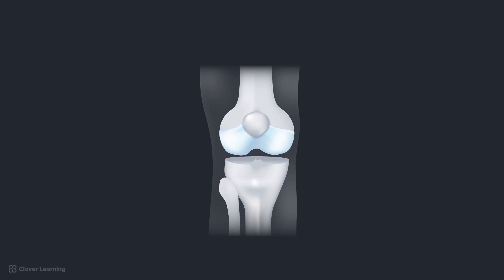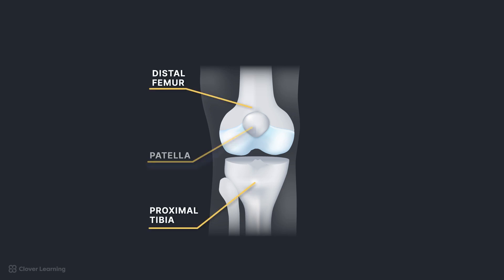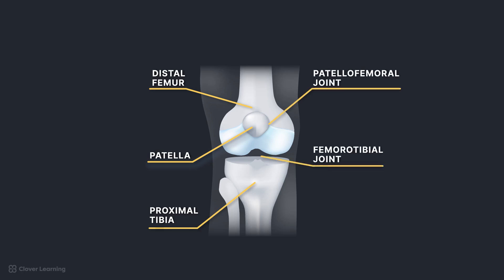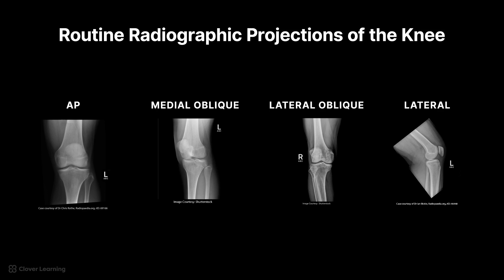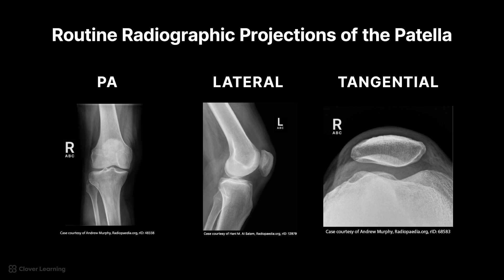In summary, the knee joint is made up of the distal femur, proximal tibia, and patella. The femur articulates with the patella at the patellofemoral joint and the tibia at the femorotibial joint. Routine radiographic projections of the knee are AP, medial oblique, lateral oblique, and lateral. Routine radiographic projections of the patella include the PA, lateral, and tangential. In the next lesson, we will take a closer look at the radiographs to identify this anatomy.